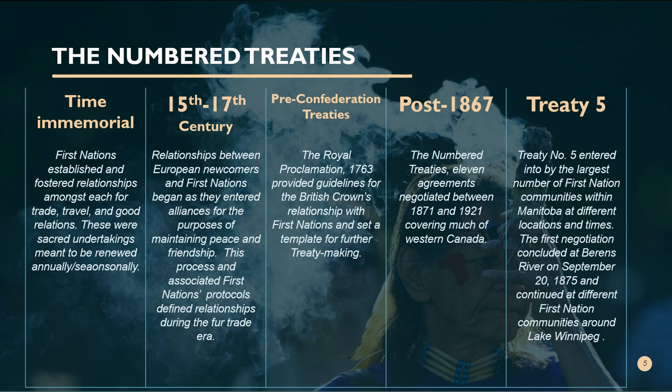Treaty making continued sequentially after that. Treaty Number Two was made about two weeks later at Manitoba House. Treaty Number Three and Treaty Number Four followed. Where we live here in The Pas and OCN, we are in Treaty Number Five. Treaty Number Five was entered into in 1875 and 1876, and it is the largest treaty area in Manitoba with the largest number of First Nations entering into it.